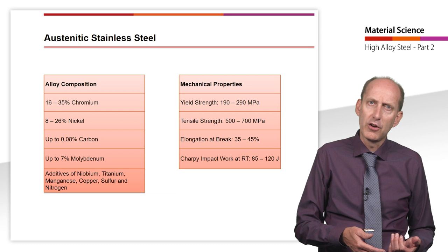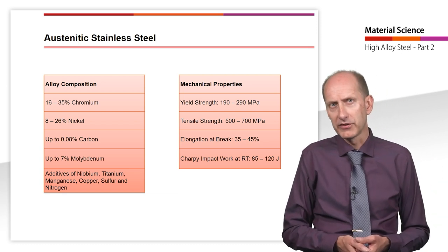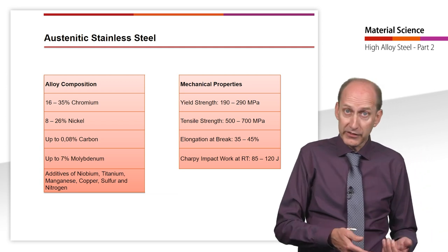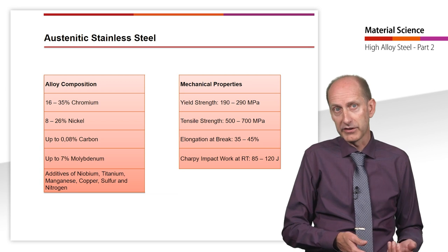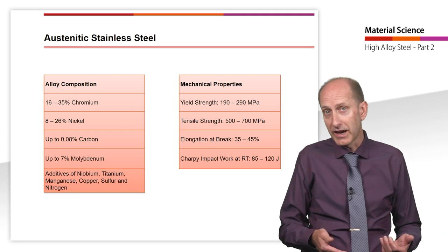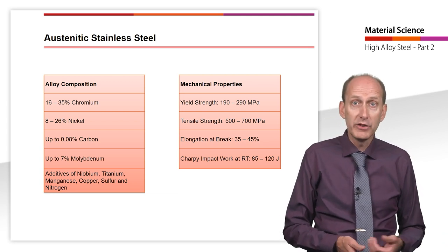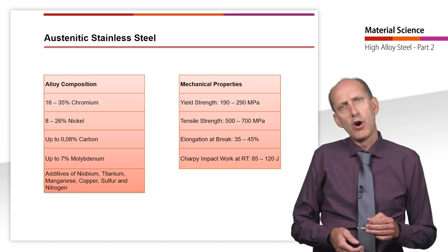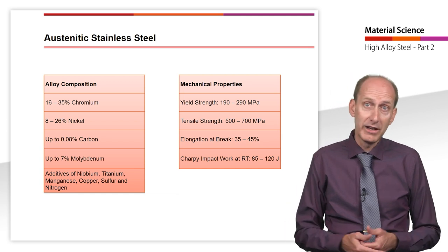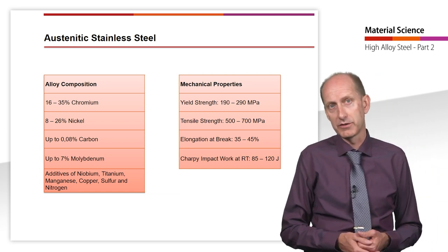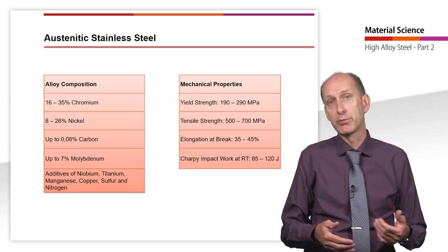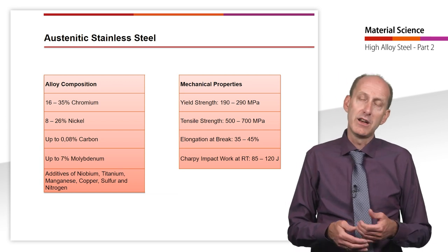This solution annealing is carried out, as we have already learned in the videos on heat treatment of steel, at high temperatures of 1000 to 1150 degrees Celsius, with subsequent accelerated cooling in water. Austenitic steel is not hardenable compared to martensitic steel. However, an increase in strength can be realized via strain hardening. Strengths can also be increased by adding nitrogen in small amounts of 0.1 to 0.3%. Yield strength values of up to 400 MPa can be achieved. Further notable advantages are the extremely favorable toughness properties, which are maintained even at low temperatures.